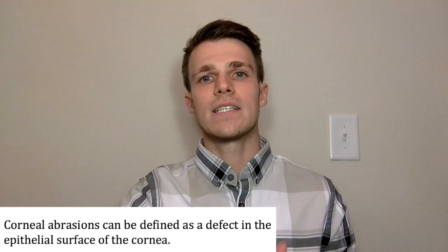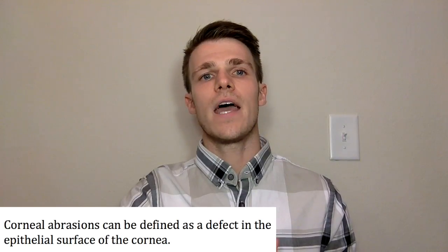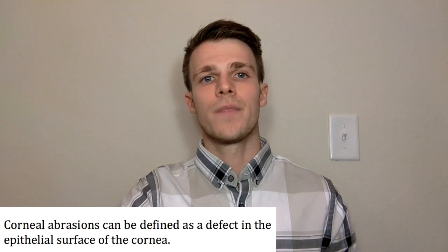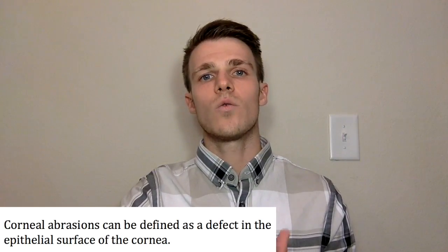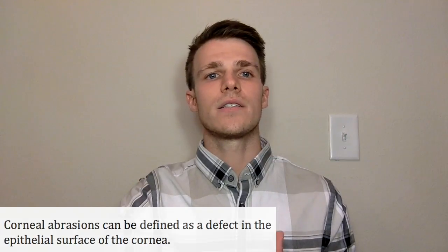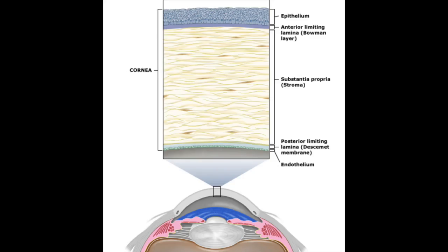Corneal abrasions can be defined as a deficit in the epithelial surface of the cornea. In order to fully understand where exactly the deficit occurs, let's briefly go over the basic anatomy of the cornea. The cornea is made up of five layers, with the outermost layer being the epithelium. Next, you have the anterior limiting lamina, the stroma, posterior limiting lamina, and the endothelium.